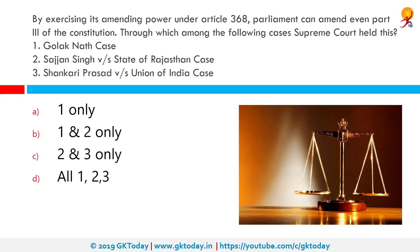By exercising its amending power under Article 368, Parliament can amend even Part III of the constitution. Which cases held this? The Supreme Court held this in the Sajjan Singh versus State of Rajasthan case and the Shankari Prasad versus Union of India case. The correct answer is two and three. The basic structure doctrine is an Indian judicial principle that the constitution has certain basic features that cannot be altered through amendments. The Parliament cannot amend the constitution in a way that takes away the fundamental rights of citizens.